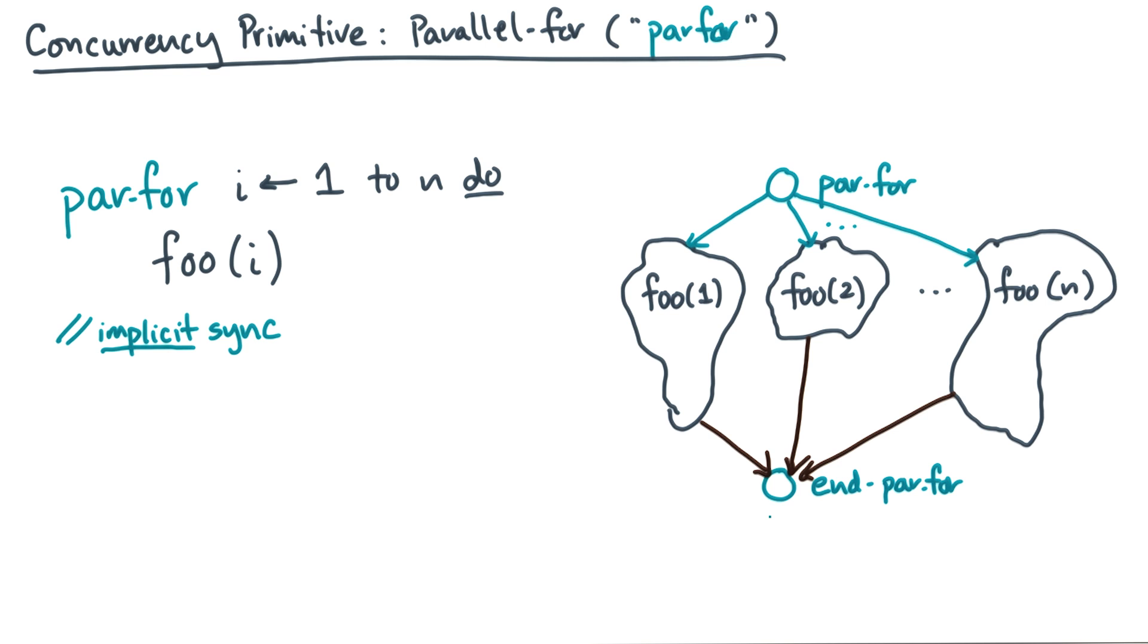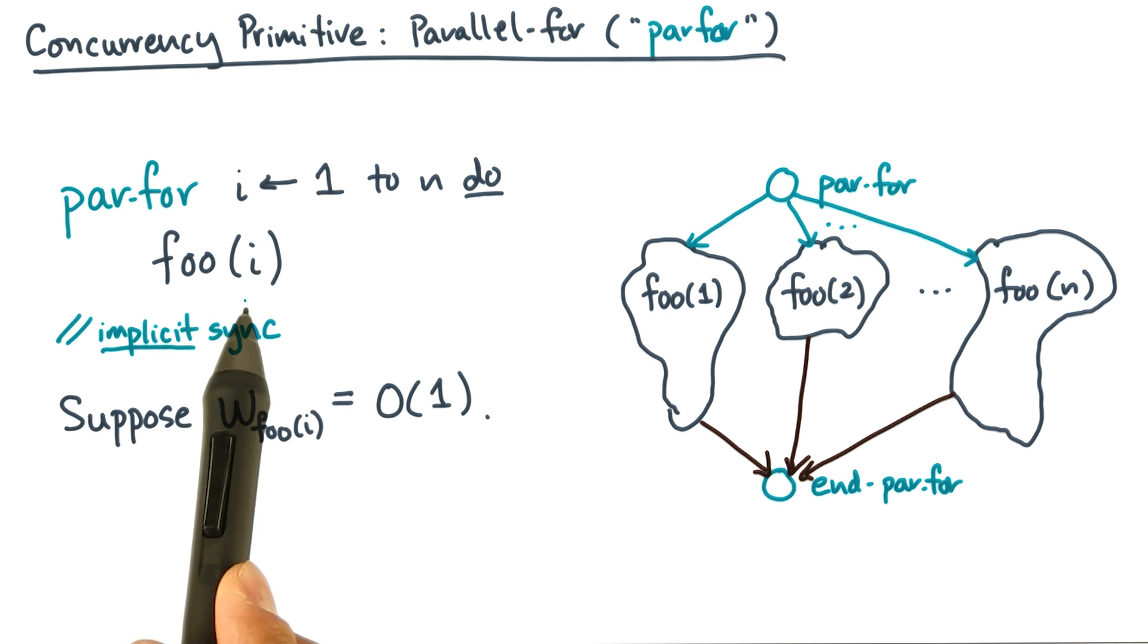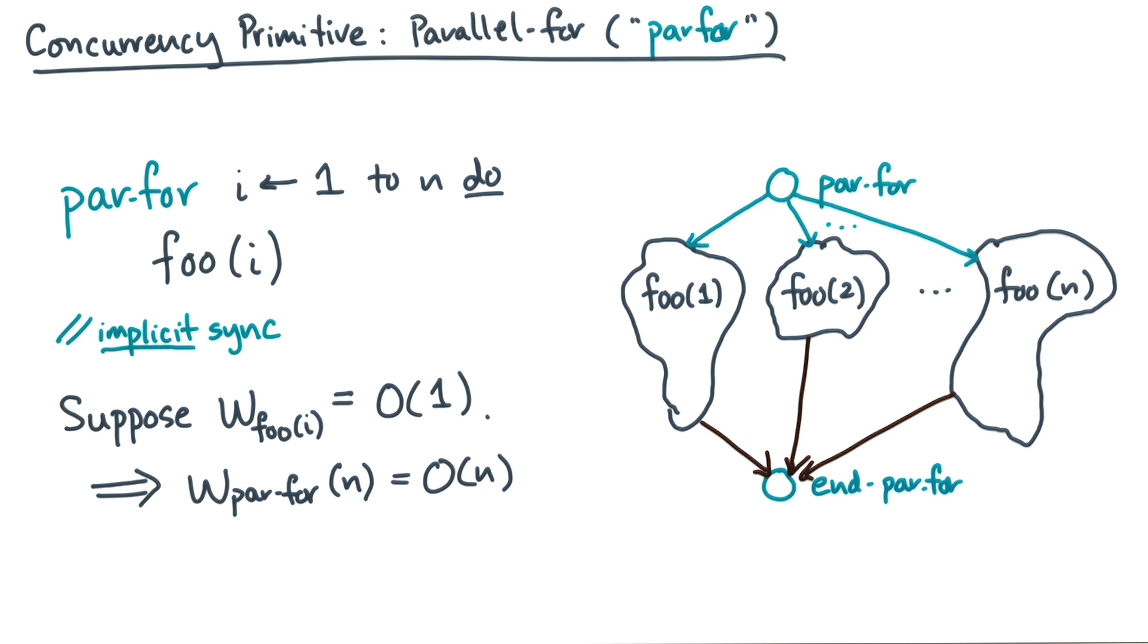Now suppose every iteration has a constant cost. That is, imagine calling foo of i is bounded by a constant. If there are n iterations, then the work of a par-for is just O of n. So what about the span?